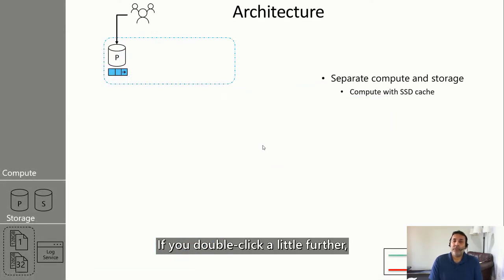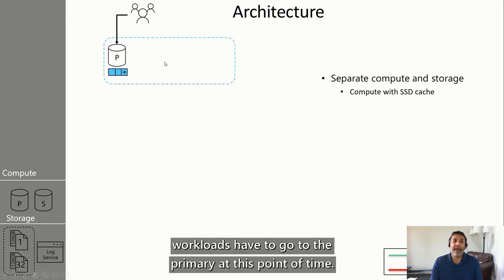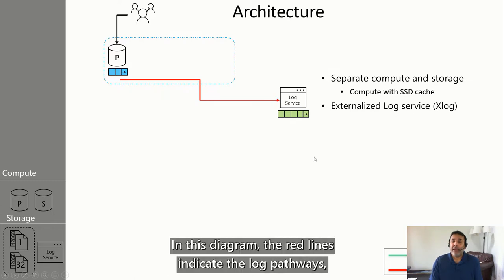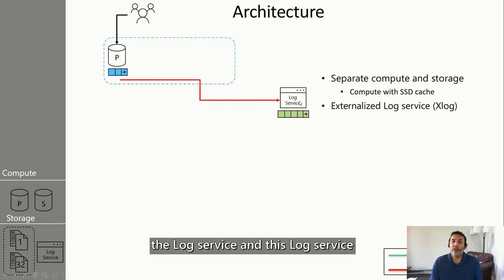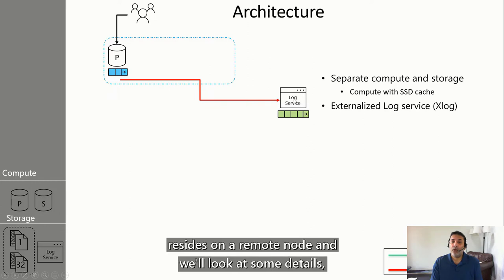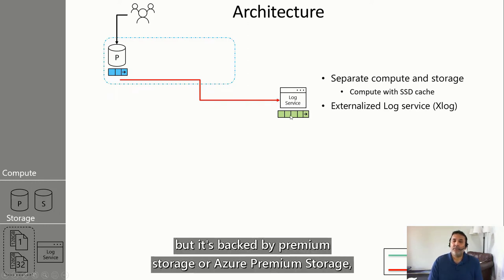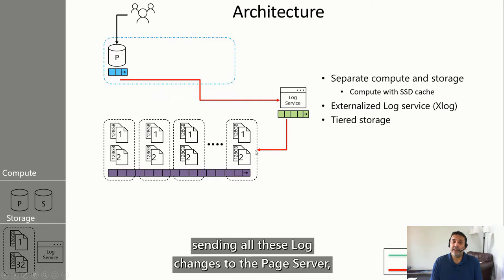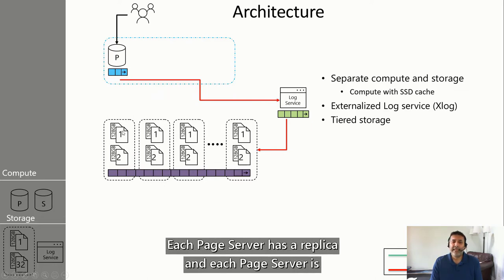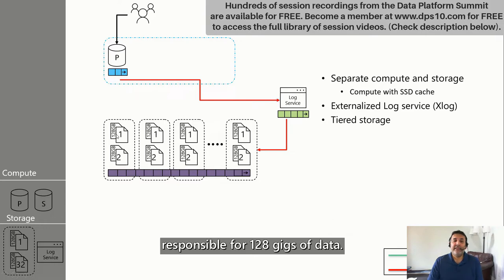If we double-click further: you have the primary compute where all users connect — all read-write or write workloads have to go to the primary. In this diagram, the red lines indicate the log pathways and the green lines indicate the data pathways. All your writes are effectively to the log service, which resides on a remote node, and it's backed by Azure premium storage, which are remote SSDs. The log service then sends all these log changes to the page server, which is the storage tier. Each page server has a replica, and each page server is responsible for 128 gigs of data.